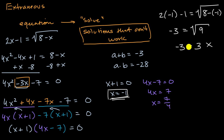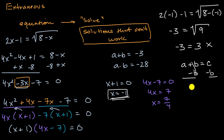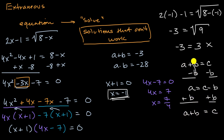But why did this happen? The key is to realize that when doing algebraic manipulation, some operations are reversible and some are not. For example, if a plus b equals c and you subtract b from both sides to get a equals c minus b, you can add b back to both sides to recover the original equation. Adding and subtracting values from both sides is a reversible operation. But squaring is not — that's exactly what we did when going from the first step to the next.